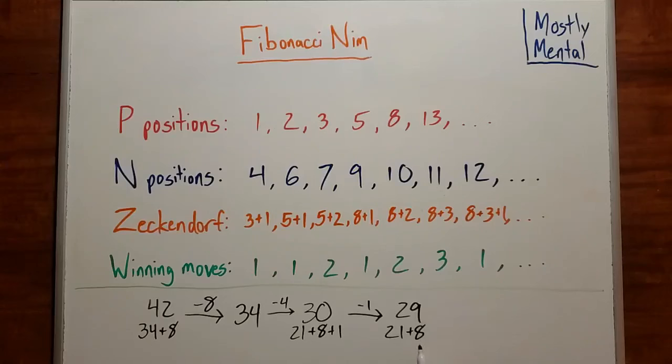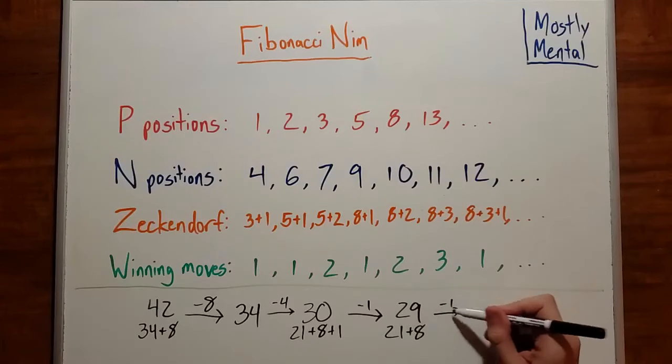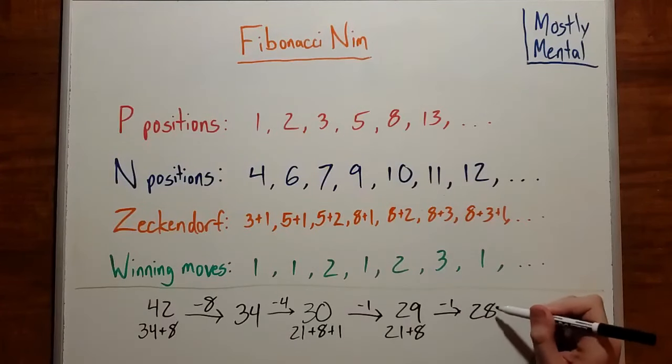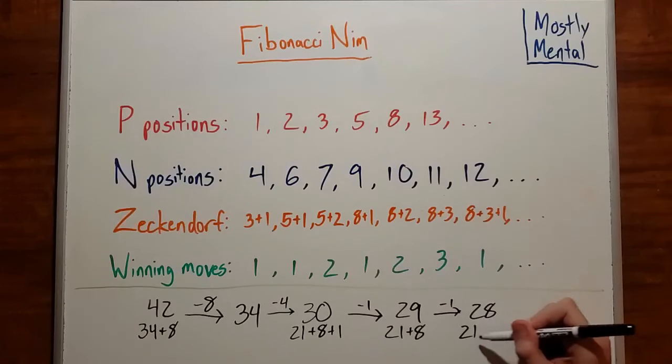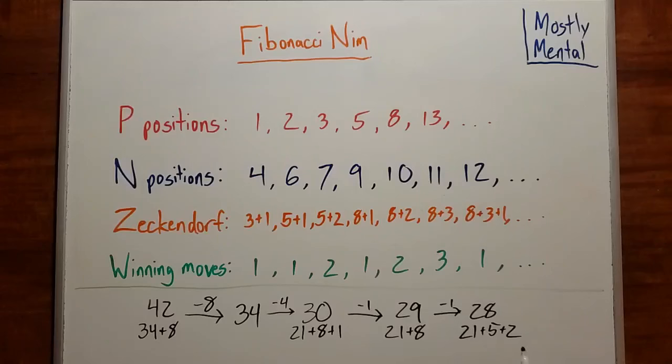And leave 28, which is 21 plus 5 plus 2. And we can remove that 2, but then our opponent won't be able to remove the 5. And so on. Well, it certainly seems like something's working. These turns are alternating between us removing the smallest Zeckendorf term and the opponent failing to do so.